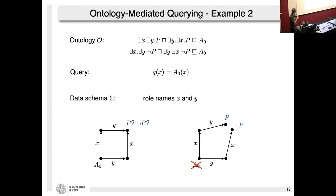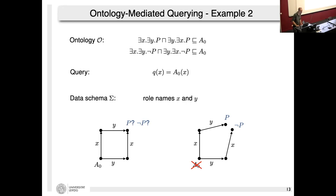Intuitively, the P that does not occur in the data acts like a universally quantified unary second-order variable. Something like this will be going on implicitly and explicitly throughout the remaining tutorial.